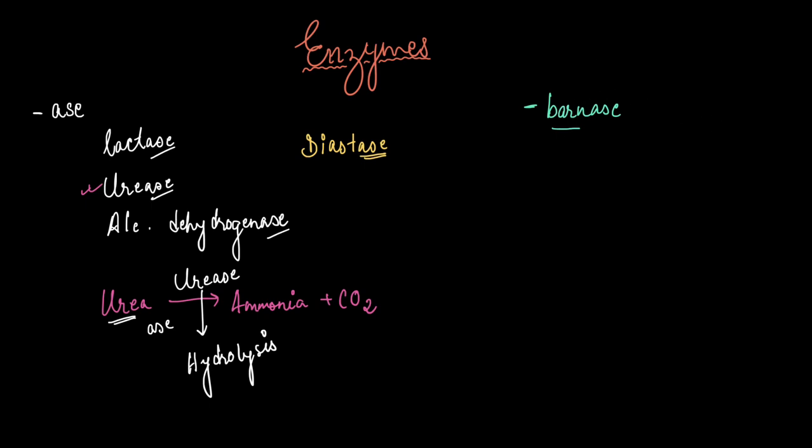Gradually, scientists started naming enzymes with a hint of the reaction it was catalyzing. For example, glucose oxidase. Here the substrate name is very clear and the reaction is again very clear. It is an enzyme that does the oxidation of glucose.